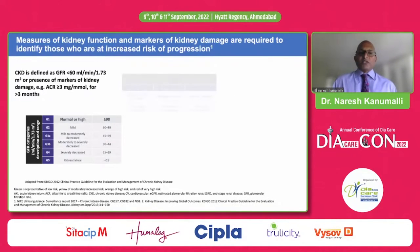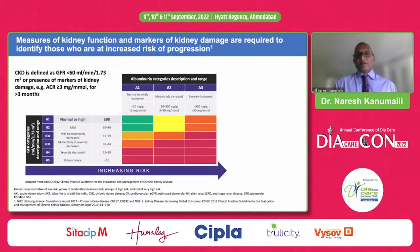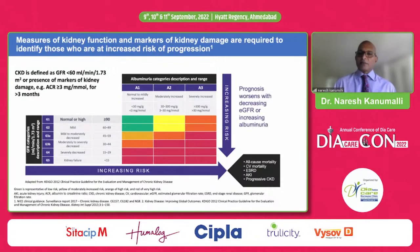The KDIGO heat map shows the different CKD classifications and risk levels. As eGFR worsens or proteinuria increases, risk increases — including all-cause mortality, cardiovascular mortality, end-stage renal disease, and acute kidney injury. Everything worsens as you move toward the red zone. With therapies now available, we can prevent progression toward the worst outcomes. Prognosis worsens with decreasing eGFR or increasing albuminuria.